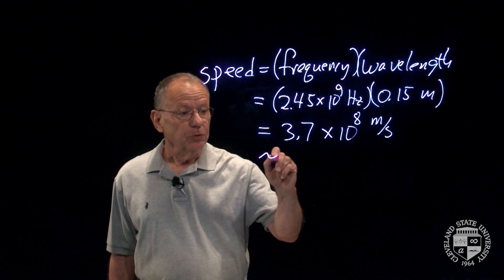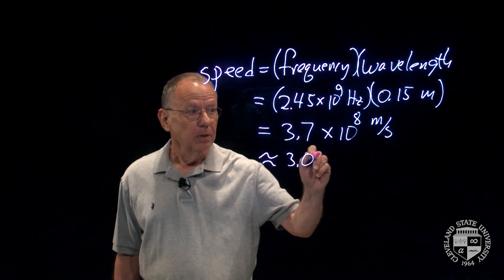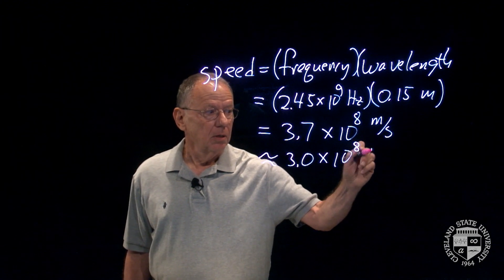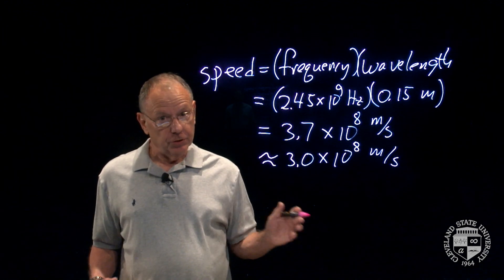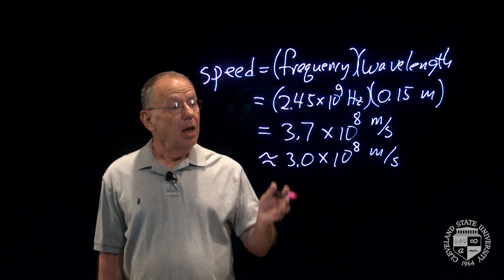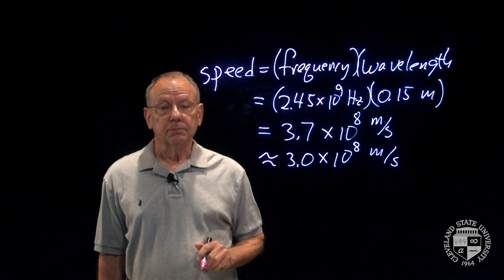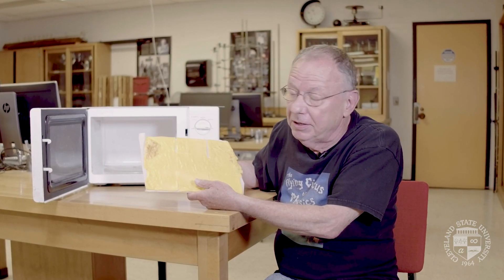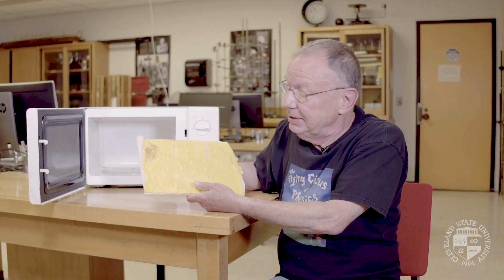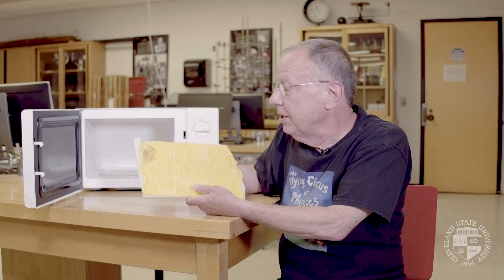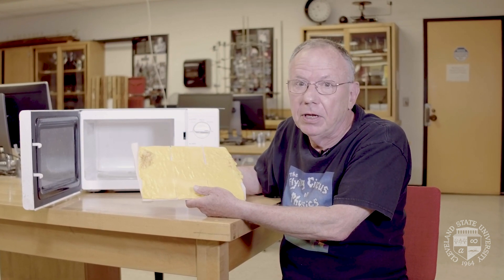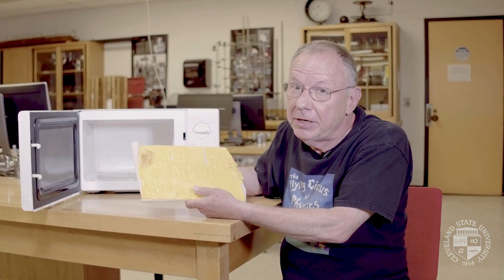That's really close to the accepted value of 3.0 times 10 to the 8 meters per second. So with just cheese, I'm really, really close. There you have it — not only do I have the speed of light, but I've also got my lunch for today. Thanks for watching. Hope to see you again here at the Flying Circus of Physics. Just remember, physics is everywhere, even in slices of cheese.